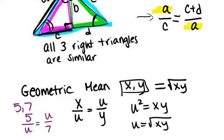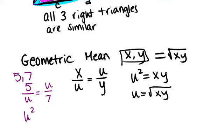And that will always just end up being the square root of 5 times 7, which is 35. So the geometric mean of 5 and 7 is the square root of 35.